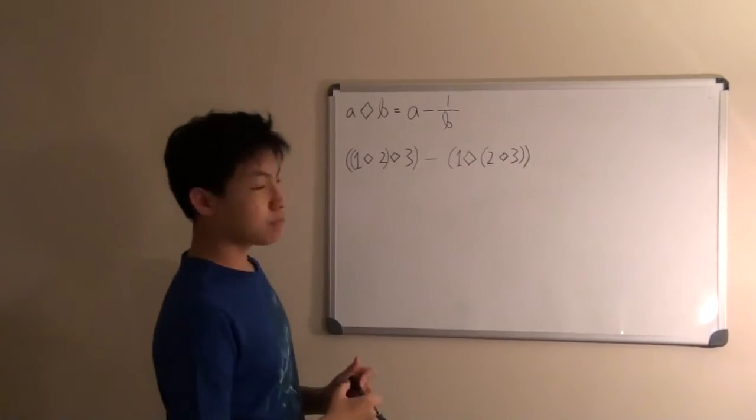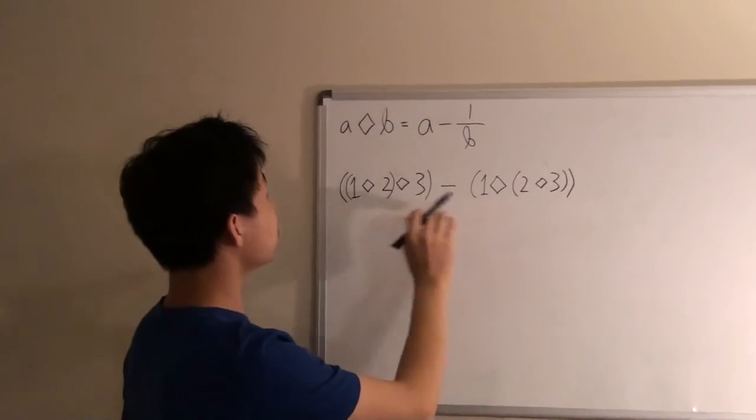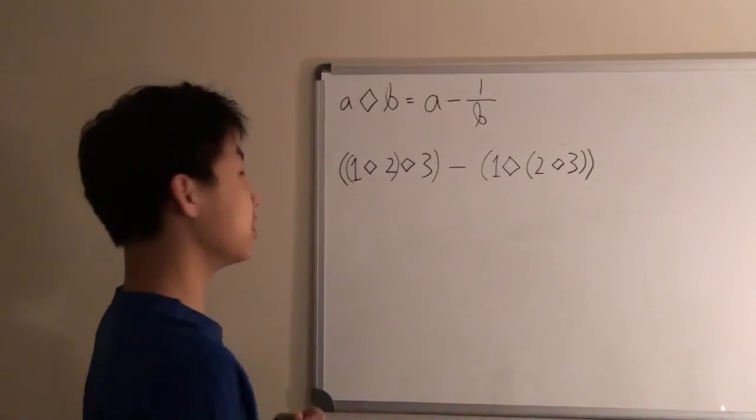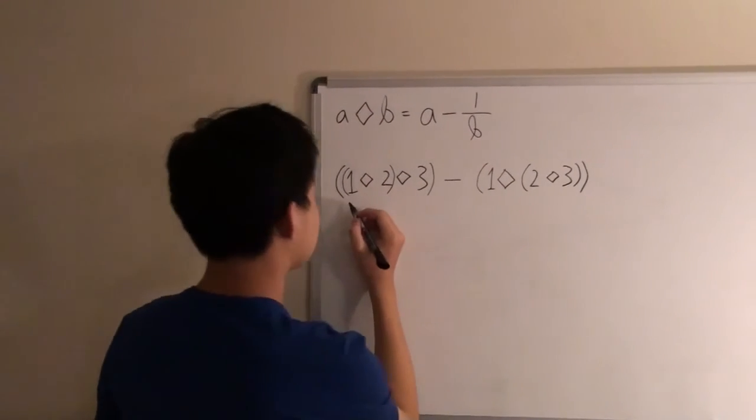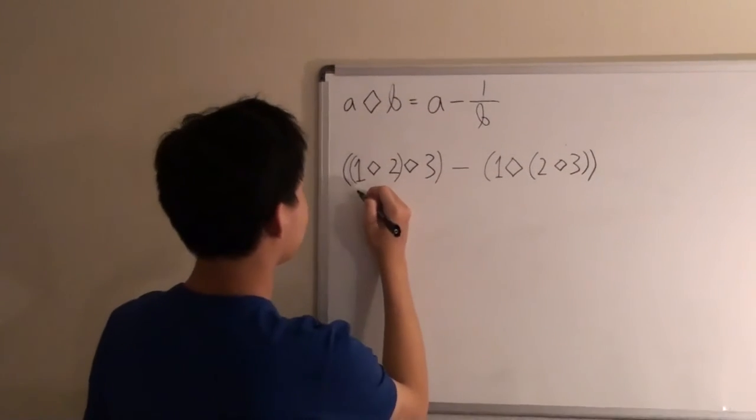For this problem, all we need to do is plug in the numbers that are given in this expression into the expression that we are given with A and B. We'll start off with the highest priority parenthesis ones.